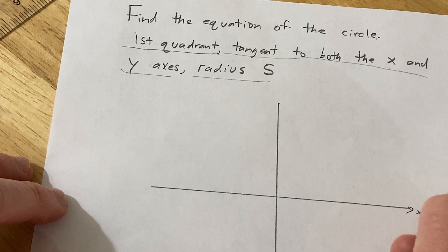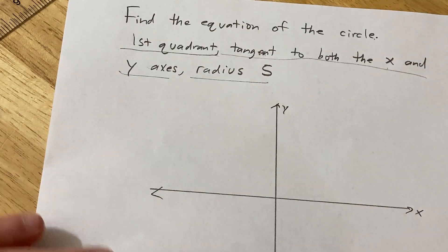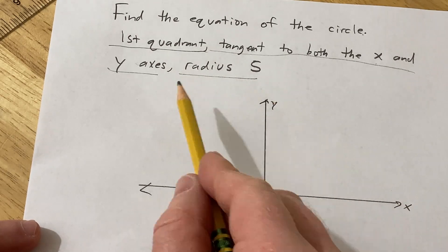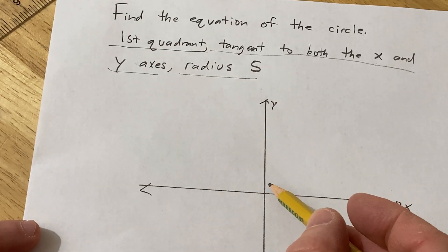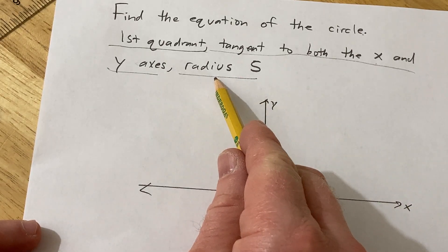Okay, we just have to think about what this means graphically and we should be able to come up with the answer. It's a circle that just touches the x and y-axis. Basically there's infinitely many circles like that, right? The only difference here is the radius is 5.